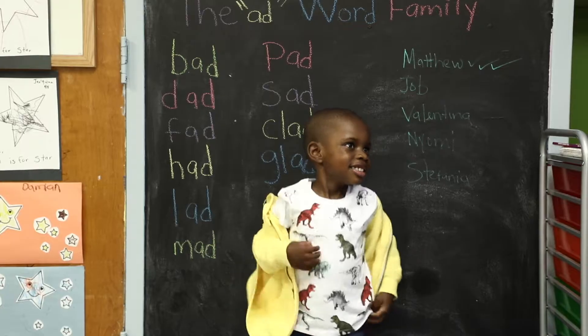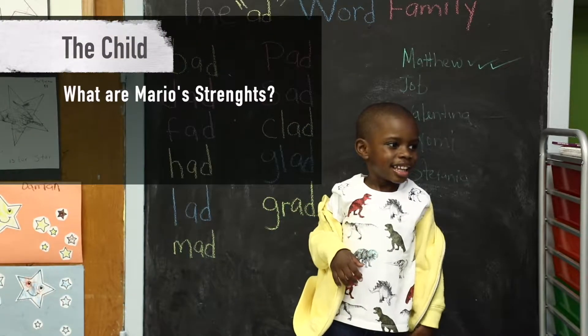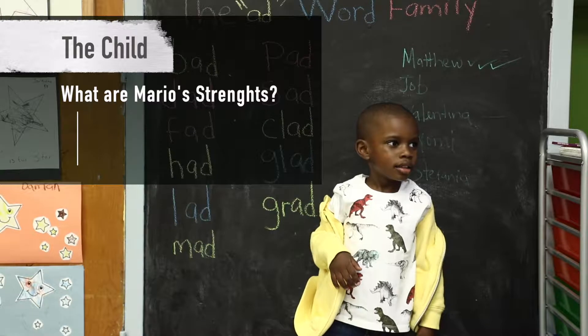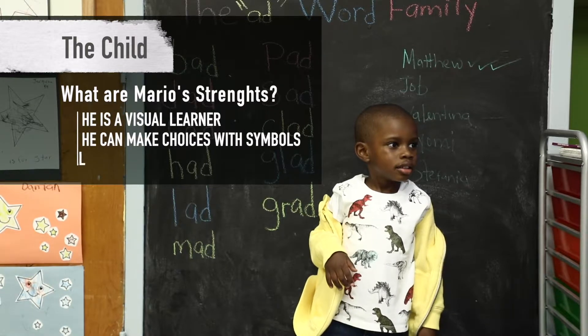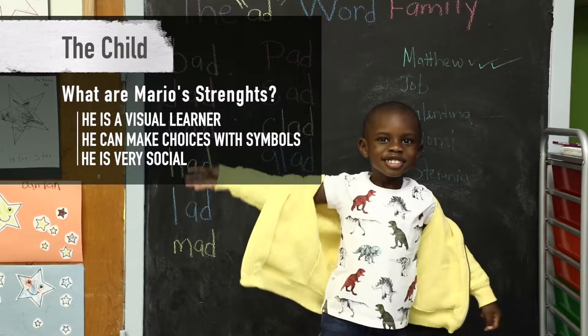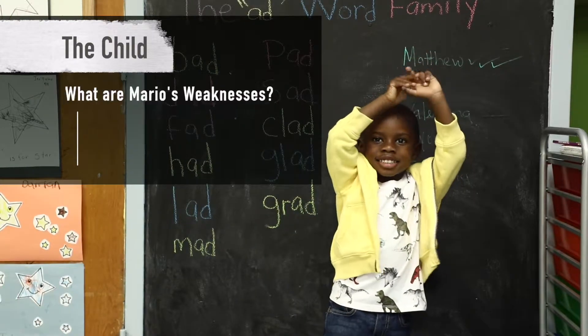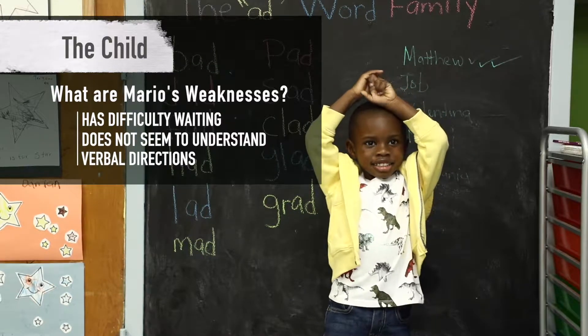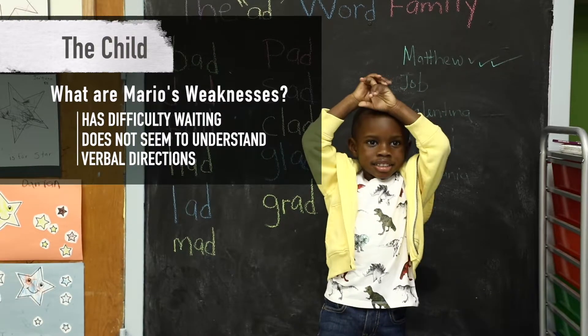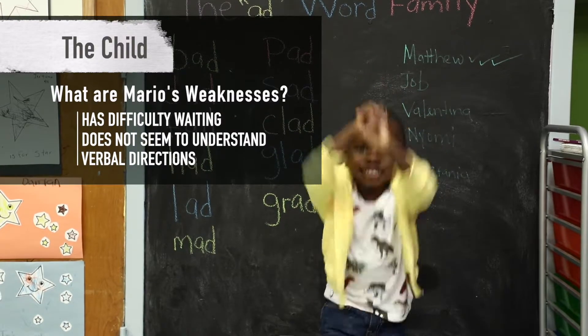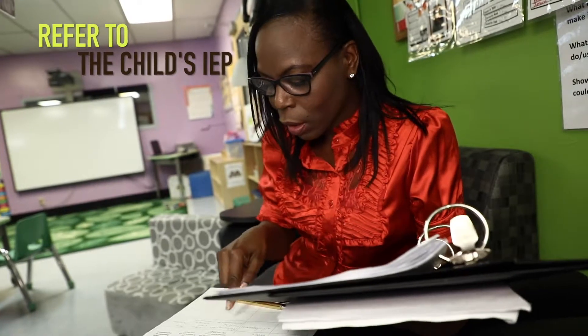So how do we consider our AT options for Mario? Start with the child. What are Mario's strengths? Weaknesses? When available, refer to the child's IEP.